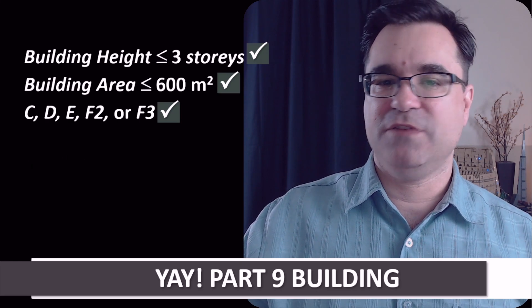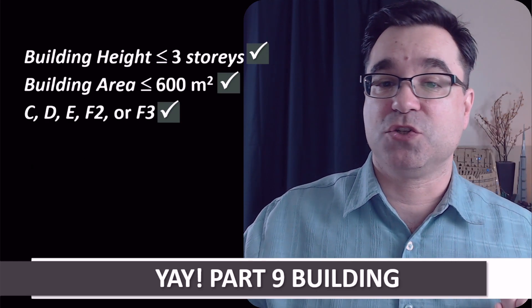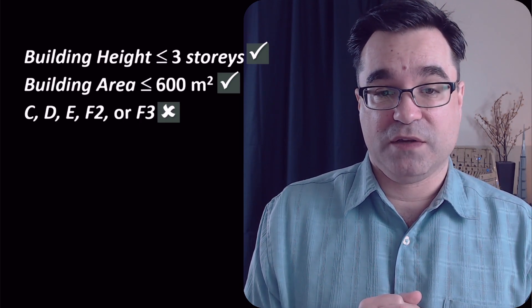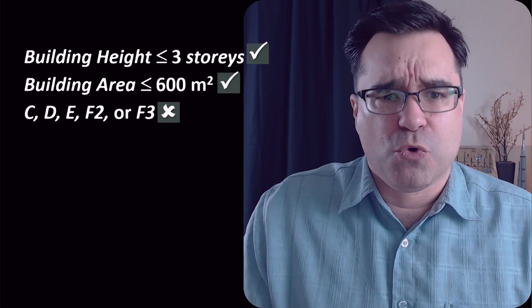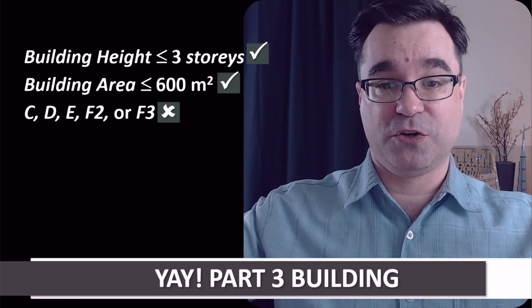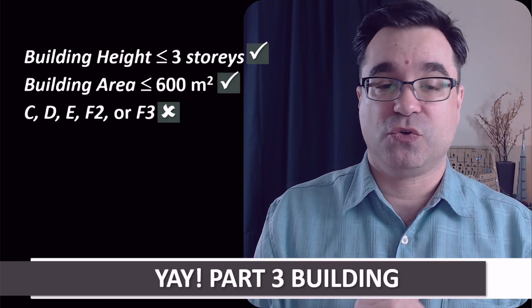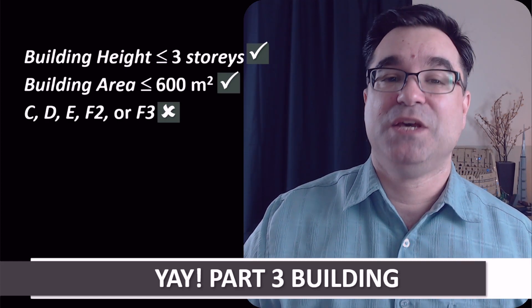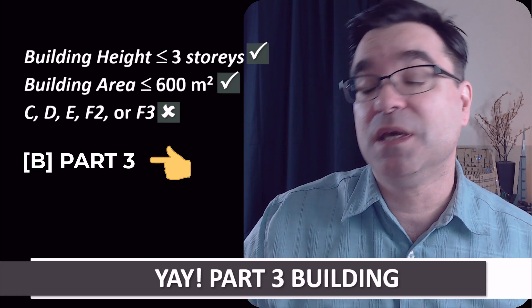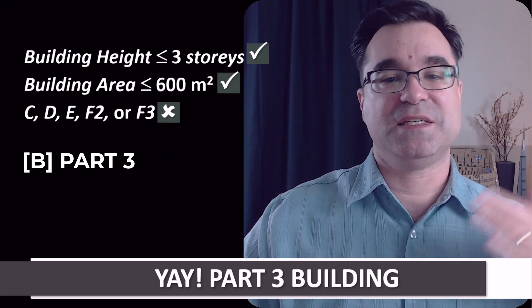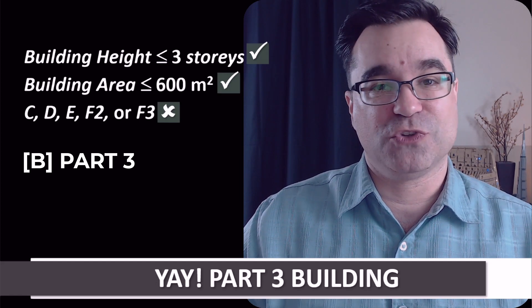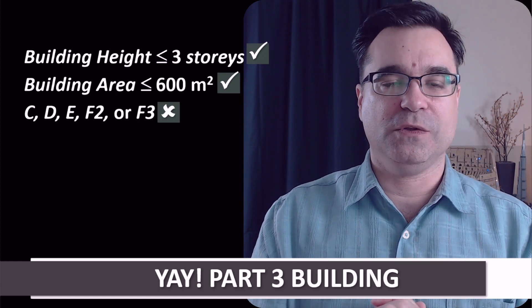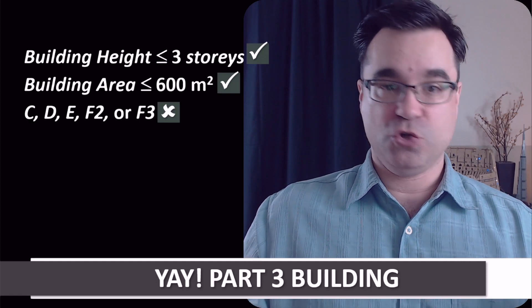But what if even one of these conditions is not true? For example, if the major occupancy is not one of the five listed, you've just figured out that the building under consideration is actually a Part 3 building. That means you go to Division B Part 3 of the Ontario Building Code for the analysis, justifications, and requirements for the building you're analyzing. Now you know where and how to start with the Ontario Building Code whenever you're faced with a new building.